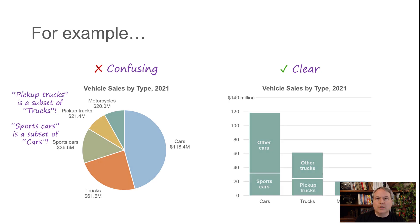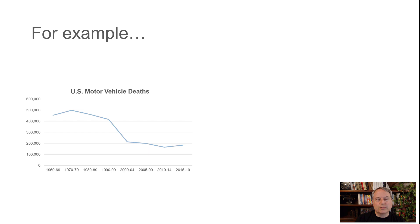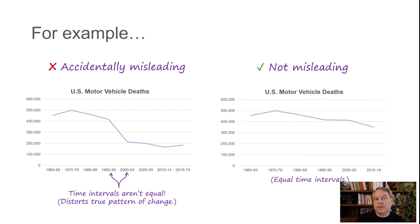Or let's look at another example: U.S. motor vehicle deaths for the last number of decades. It looks like the big story is this big dip in the 90s, but then we have a closer look and realize that these time intervals are not equal. We have intervals of 10 years, 10 years, 10 years, and then we go down to intervals of five years. Of course there's going to be a dip because there will be fewer deaths during five-year periods than 10-year periods. This is actually misleading because the time intervals are not the same. This is kind of a common mistake that distorts the true pattern of change. If we want to show patterns of change, we have to make sure our intervals of time are equal.